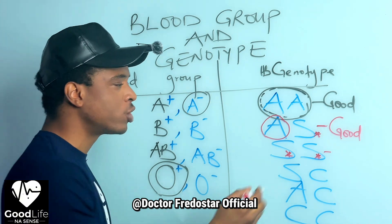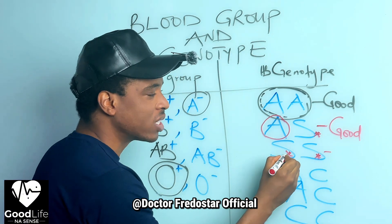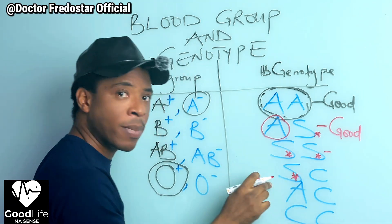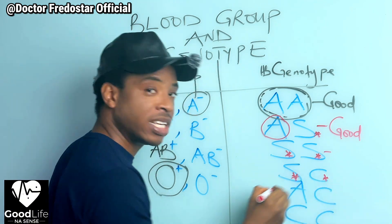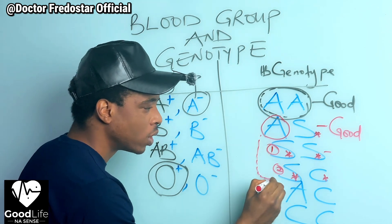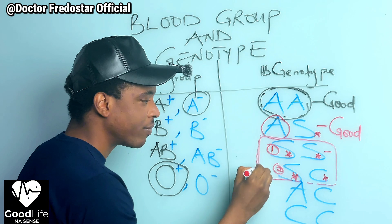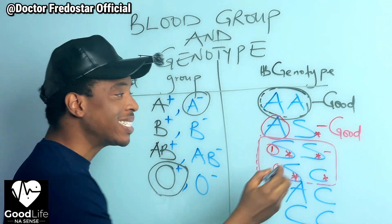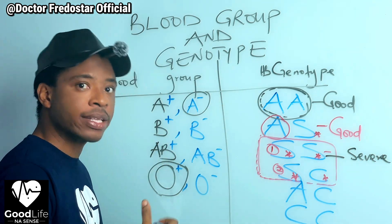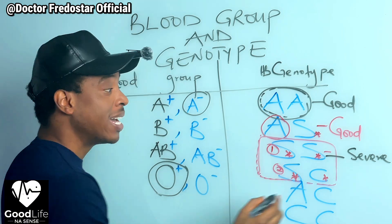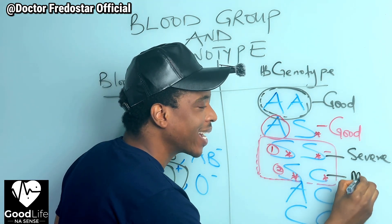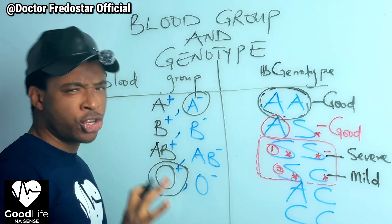If you are SC, it means you have one abnormal S and one abnormal C. These two — the SS and SC — are like brothers and sisters. SS causes severe problems; people with SS have sickle cell disease and get a lot of problems. SC is like the junior brother of SS — they get some problems, but their problems are milder than SS.